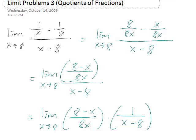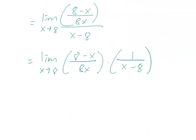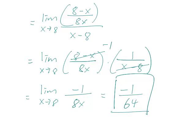Since you're dividing by x minus 8, you're really multiplying by the reciprocal of x minus 8. And here the 8 minus x and x minus 8 cancel out to leave a minus 1 since they're negatives of each other. And so the limit is minus 1 over 8x as x approaches 8, and the answer is minus 1 over 64.